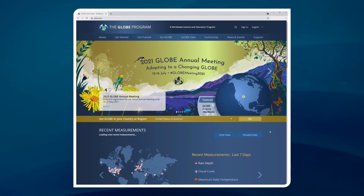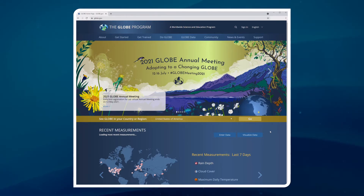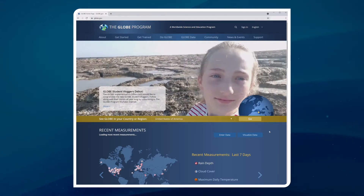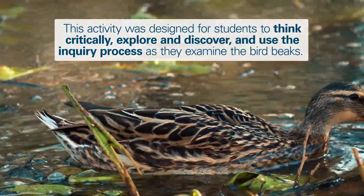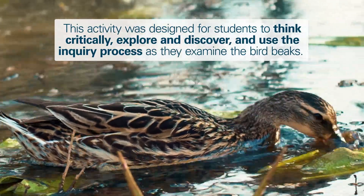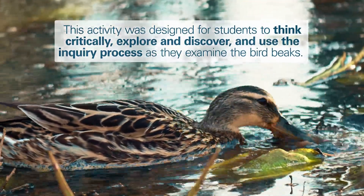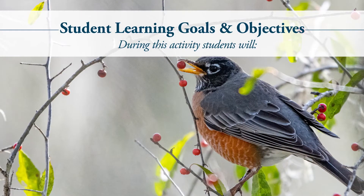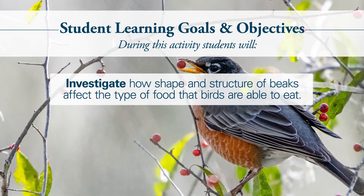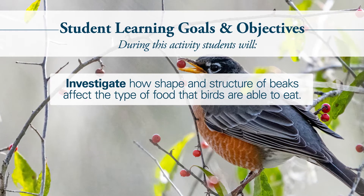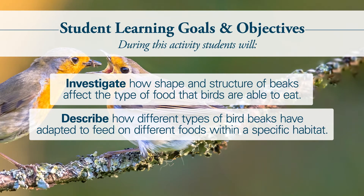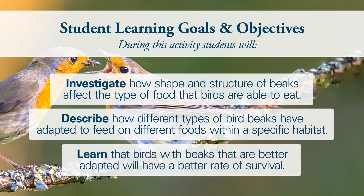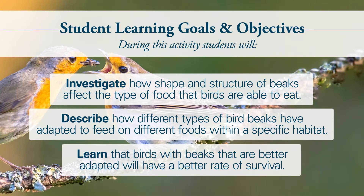This lesson was developed by the GLOBE program, which is a worldwide program that brings together students, teachers, scientists, and citizens to promote science and learning about the environment. This activity was designed for students to think critically, explore and discover, and use the inquiry process as they examine the bird beaks. The learning goals include investigating how the shape and structure of beaks affect the type of food birds eat, describing how beaks have adapted to different foods within a specific habitat, and learning that birds with better-adapted beaks have a better rate of survival.